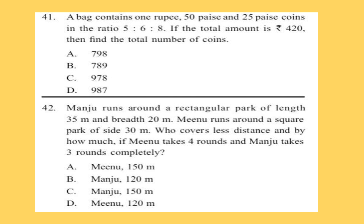Question 42: Manju runs around a rectangular park of length 35 metres and breadth 20 metres. Minu runs around a square park of side 30 metres. Who covers less distance and by how much, if Minu takes four rounds and Manju takes three rounds completely?